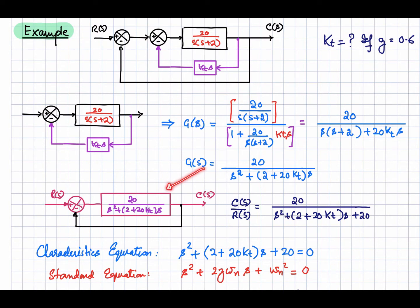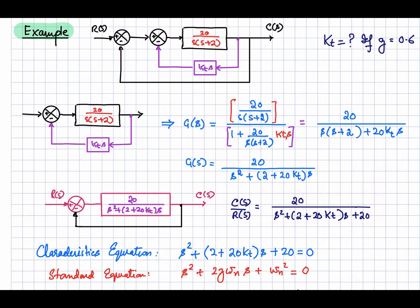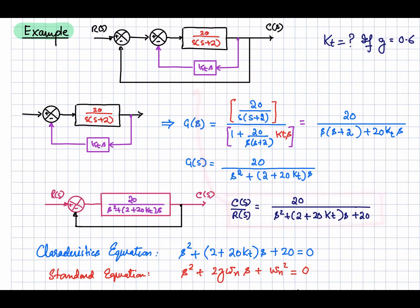Once we evaluate this, we can draw the reduced block diagram, and now we have a unity feedback loop. We can find out the closed loop transfer function using G(s) divided by 1 plus G(s), where this is G(s). The closed loop transfer function of this system is obtained, and the characteristic equation is derived from it.